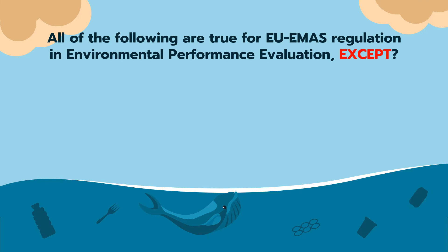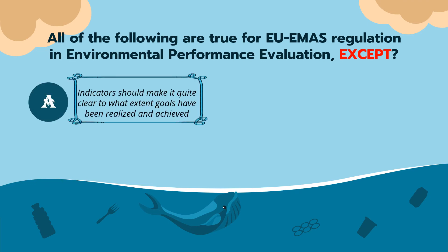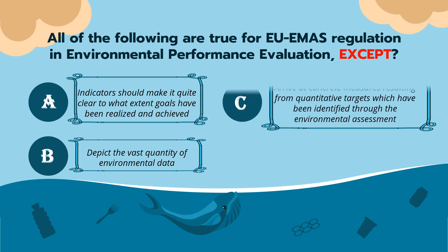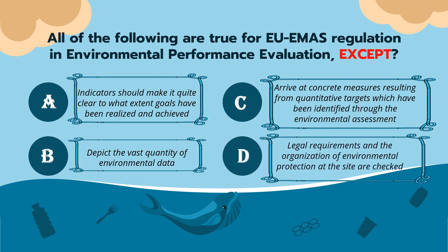Now we will recap what you have learned from this video. All of the following are true for EMAS regulation and environmental performance evaluation, except? A. Indicators should make it quite clear to what extent goals have been realized and achieved. B. Depict the vast quantity of environmental data. C. Arrive at concrete measures resulting from quantitative targets which have been identified through the environmental assessment. D. Legal requirements in the organization of environmental protection at the site are checked. The answer is B — Depict the vast quantity of environmental data.